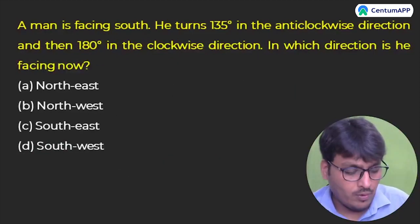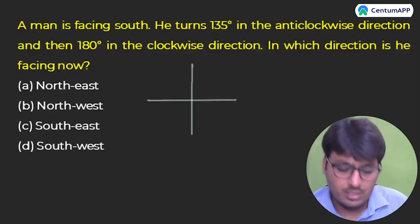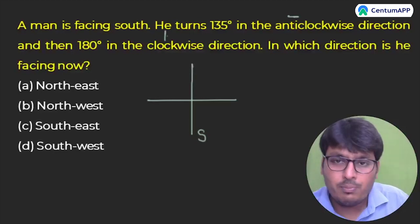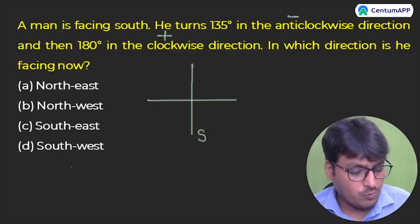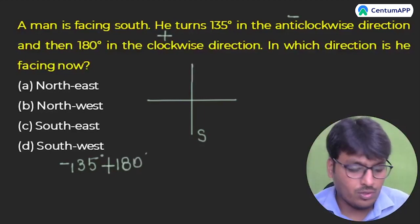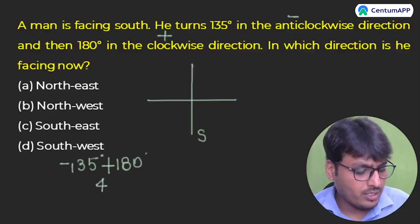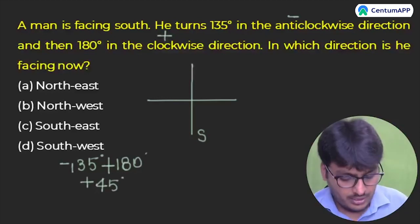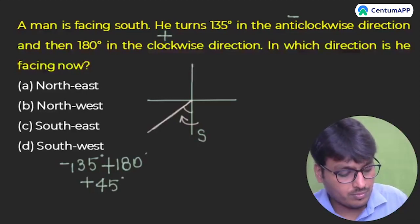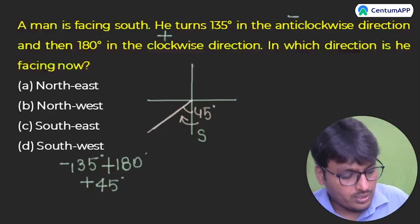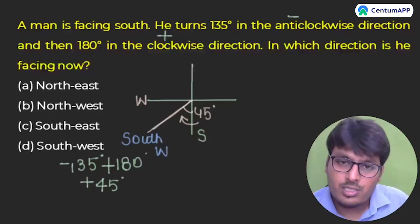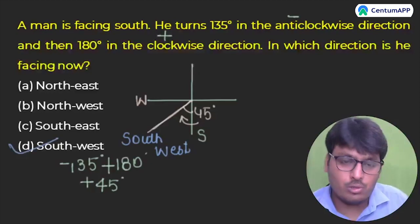Next: MN is facing south. 135 degrees anticlockwise (minus) and then 180 degrees clockwise (plus). Resultant: −135 + 180 = +45 degrees, which is clockwise. So rotate 45 degrees clockwise from south, which gives southwest. These questions are very simple. Option D: southwest is the right answer.